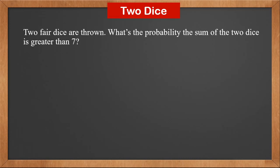Let's look at another example. 2 fair dice are thrown. What's the probability of the sum of the 2 dice is greater than 7?